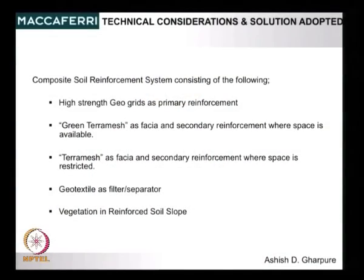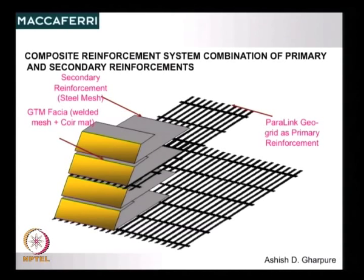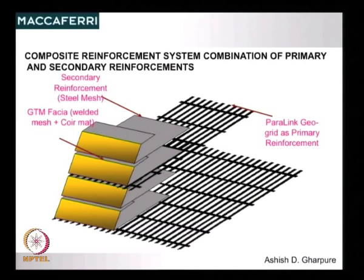Geotextile was used as a filter and separator — with a lot of flow taking place through the structure, the major concern was that soil particles should not migrate with the flow causing subsidence. Lot of geotextile was used just to protect against migration of soil particles. Deliberate vegetation plantations were also made in the reinforced soil slope. The particular geogrid used is called paralink — it is a very high-strength geogrid. The fascia is a green fascia of welded mesh with coir mat, which is pre-seeded or can be hydro-seeded later, and then it grows green in immediate contact with the soil behind.